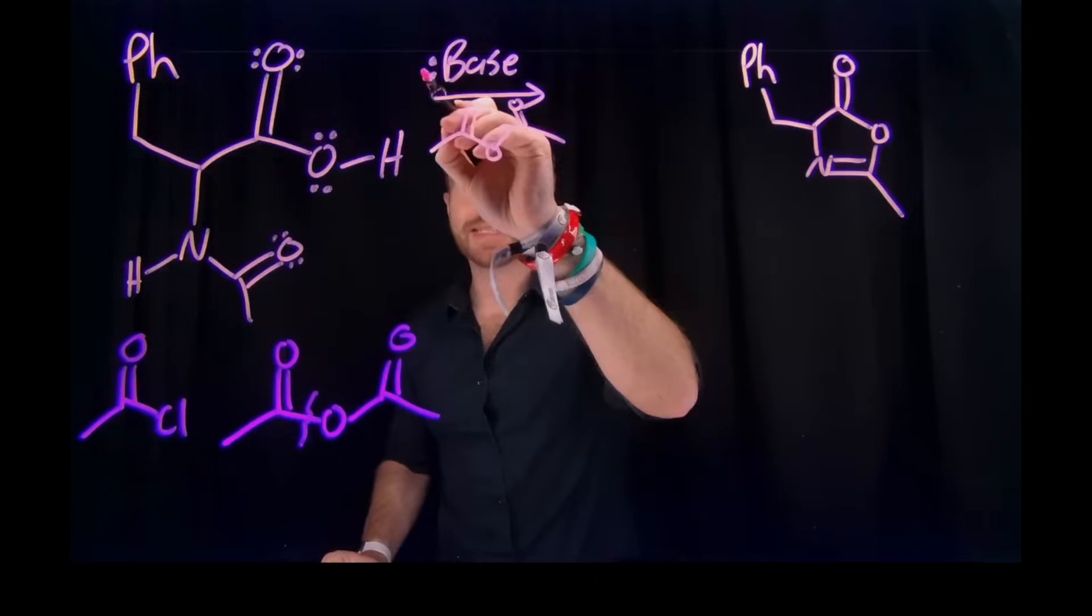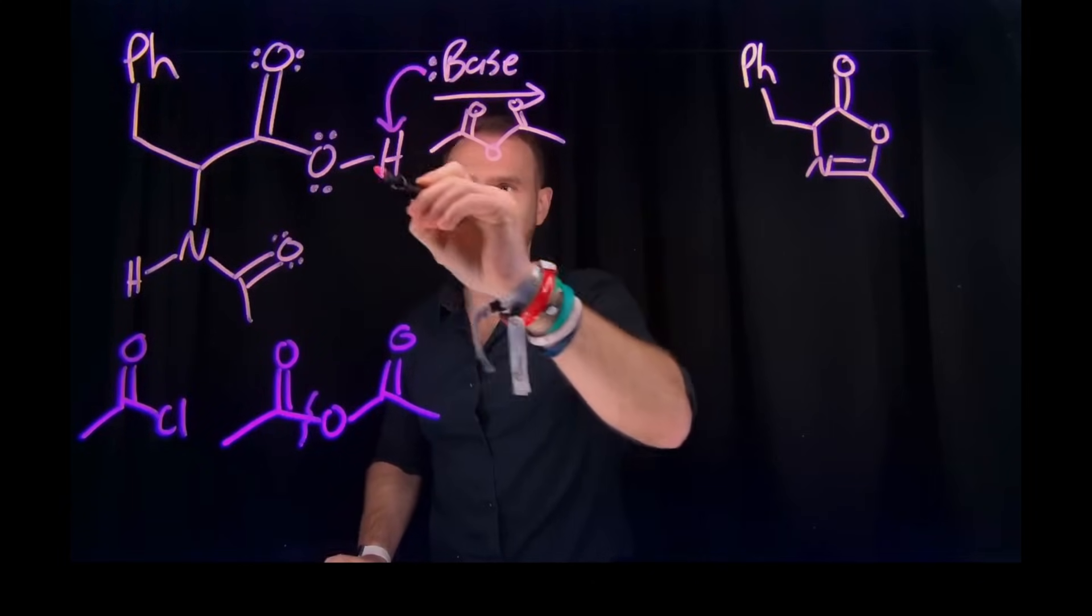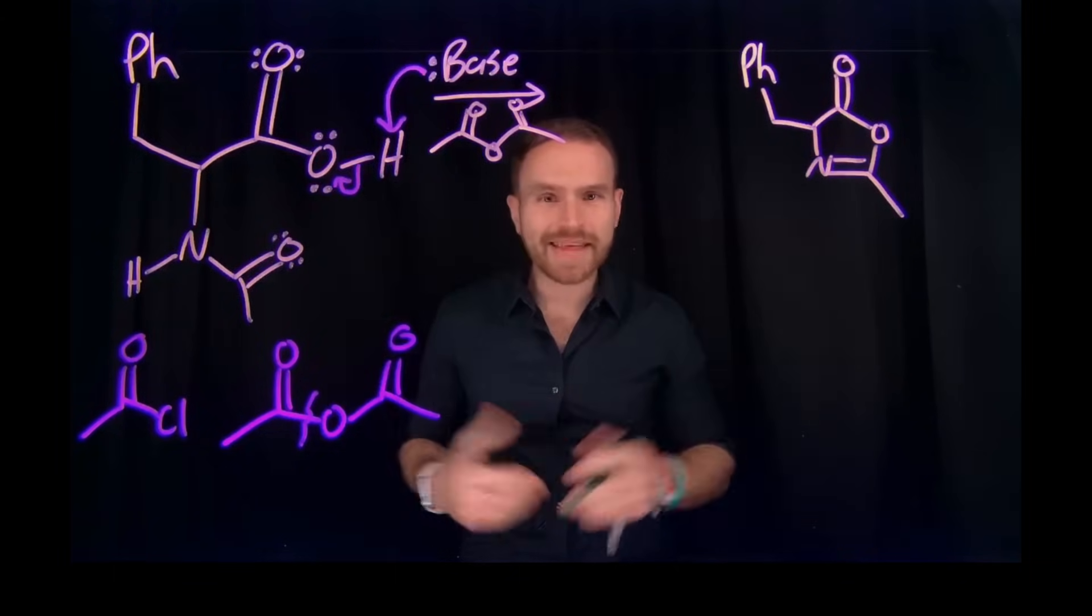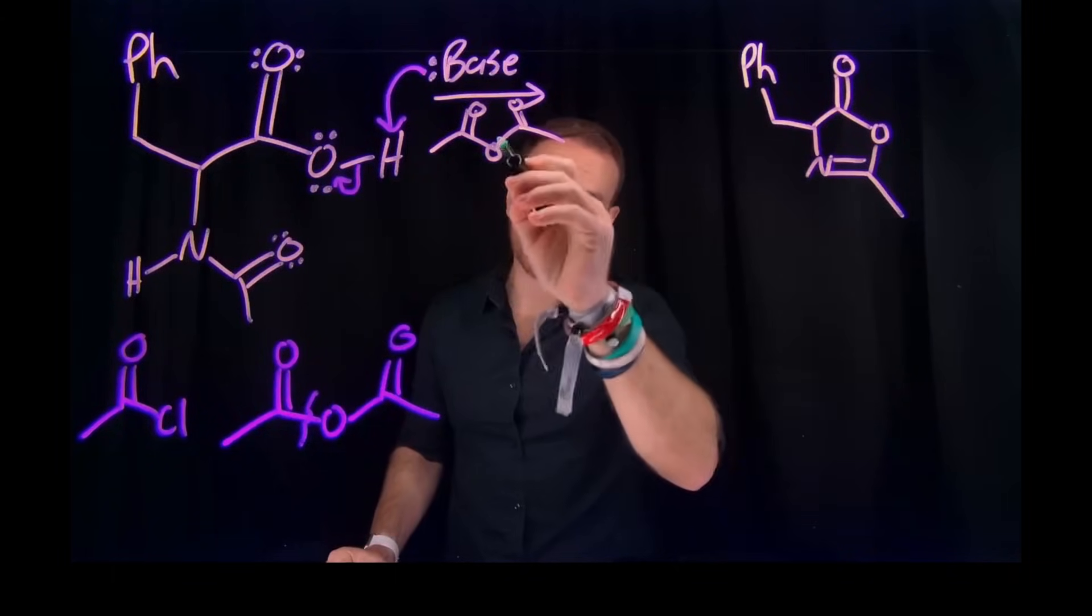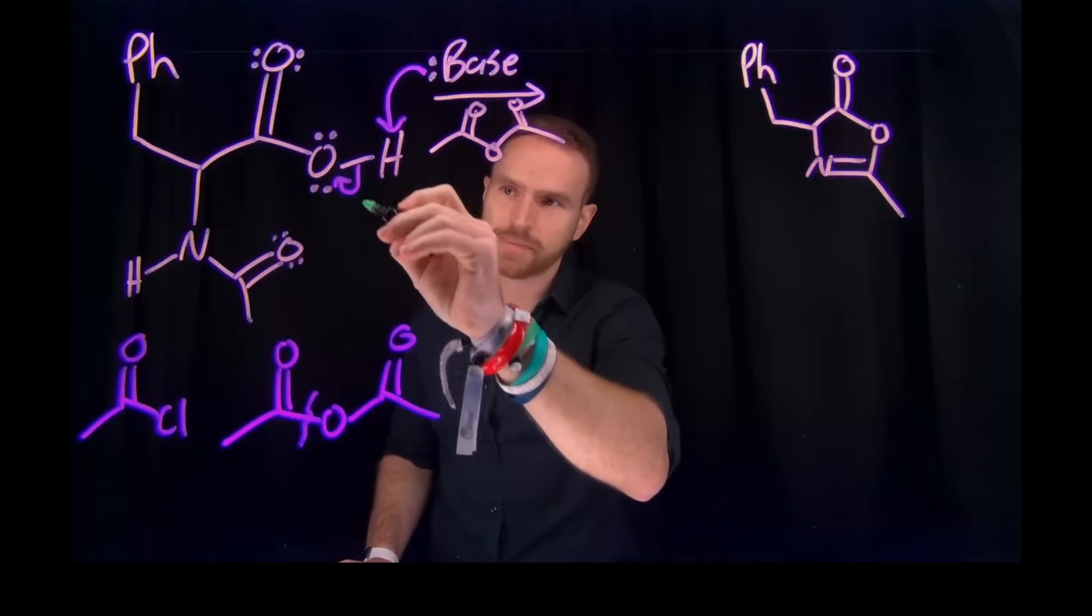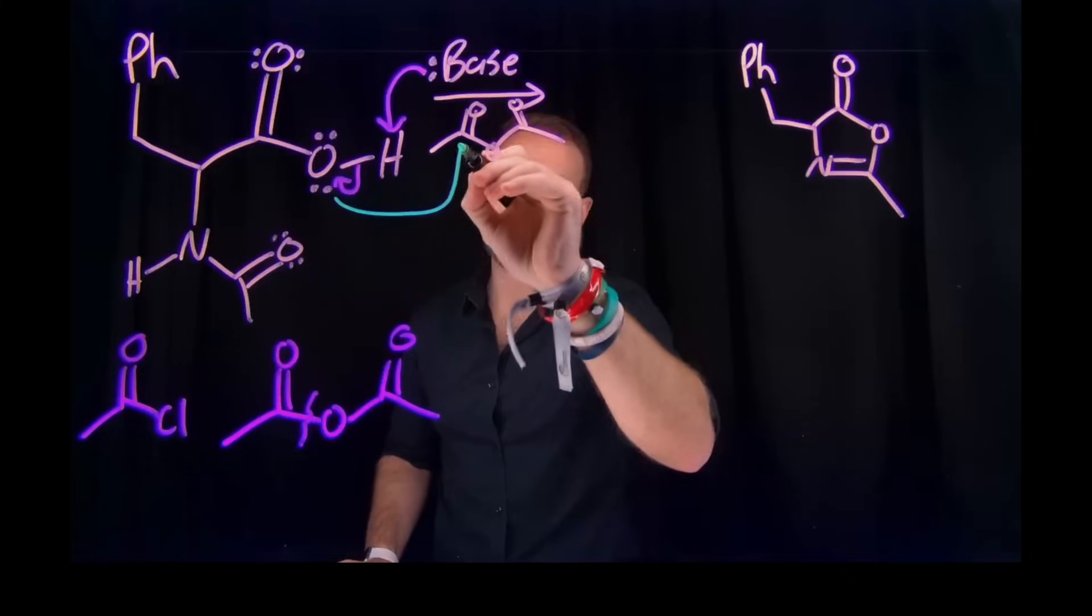The first step of which is actually the deprotonation of this carboxylic acid, where you generate a carboxylate at this position. And that's actually going to allow us to attack the acetic anhydride because now we've generated a nucleophilic site at this carboxylate position.